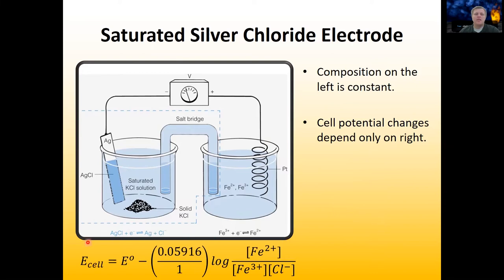If we write out the Nernst equation for this reaction, we have the concentration of Fe2+ and Fe3+. In this reaction we're just reducing iron 3+ to 2+, or going from Fe2+ to Fe3+, both aqueous. We have a platinum wire in here because platinum is a relatively neutral metal that generally doesn't like to undergo oxidation or reduction if something else can be. We also have the concentration of our chloride ion from our saturated cell — but since it's saturated, its concentration is going to be constant and not changing over time.